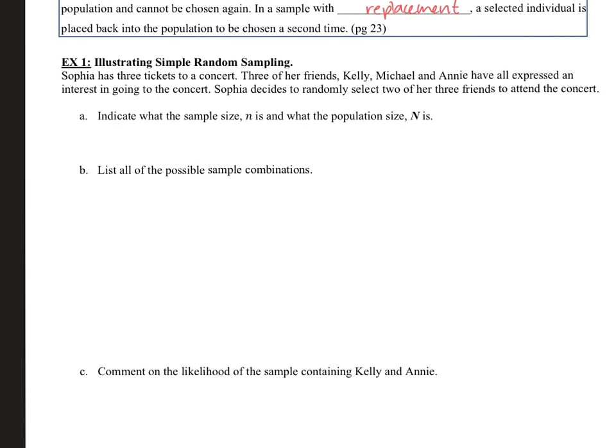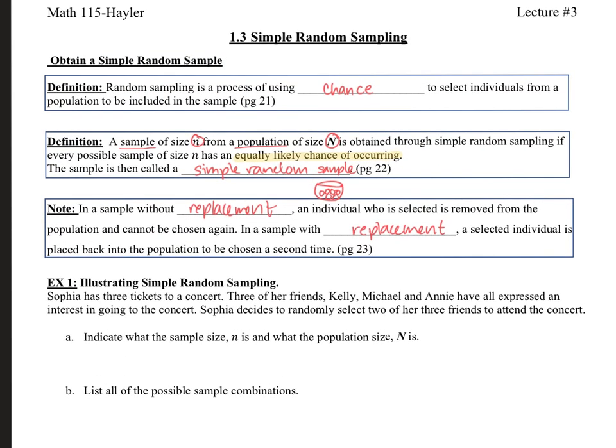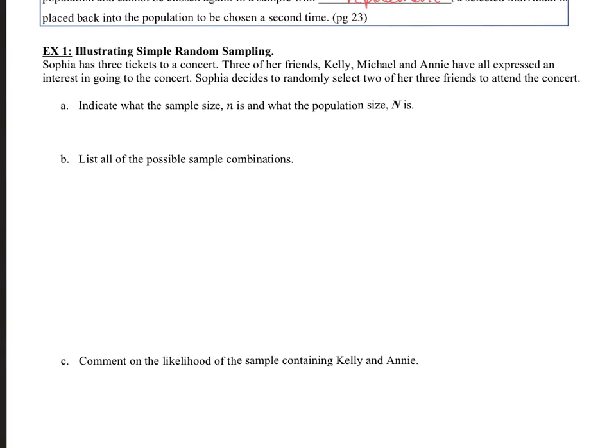Alright, let's go ahead and take a look at the one example for this section. This is illustrating simple random sampling. And once again, for simple random sampling, one of the main things we want to look at is the fact that they have an equally likely chance of occurring. Keep that in mind.